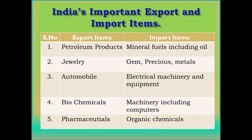India's important export items include petroleum products, jewelry, automobile, biochemicals, and pharmaceuticals. India's important import items include mineral fuels including oil, gems and precious and semi-precious metals, electrical machinery and equipment, machinery including computers, and organic chemicals.